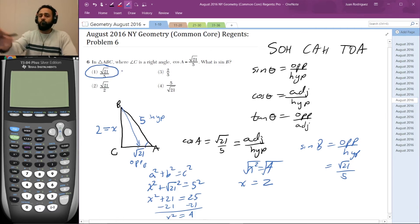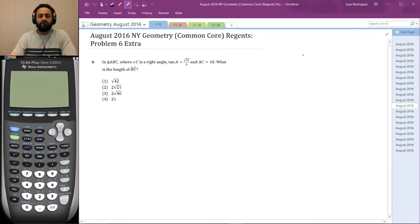Hopefully that was helpful. Let's go on to the next problem which we created ourselves, a similar problem but not quite the same. In triangle ABC where angle C is a right angle and tan A = √21/5, and side AC is 10, what is the length of BC?